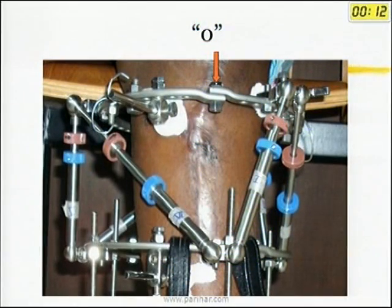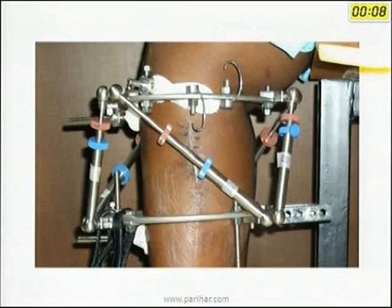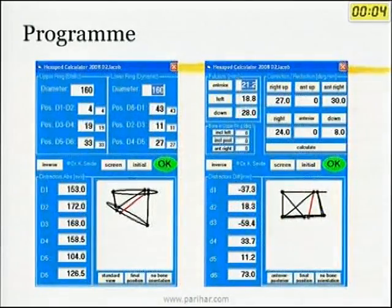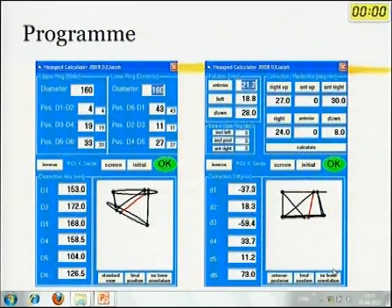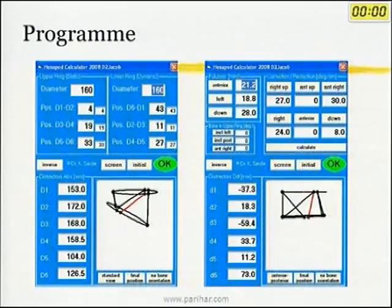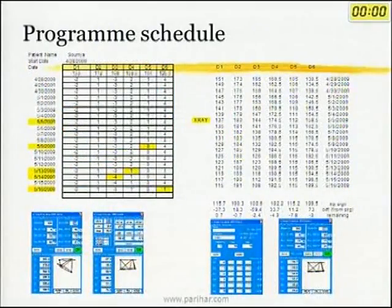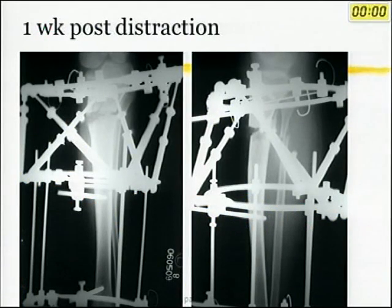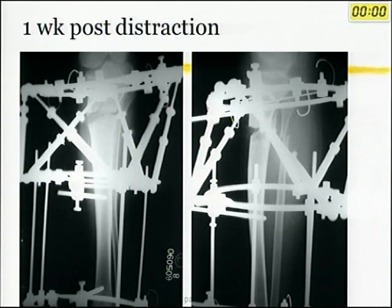An Ilizarov frame was applied with the reference connector positioned on the AP and lateral views. The data entered included a varus of 27 degrees, some translation, and a rotation of almost 30 degrees. The advantage of using a hexapod system is that all three corrections can be done simultaneously. The software shows visually what the frame looks like and how it will appear when corrected, and generates the distraction schedule. At one week post-distraction, the angulation is correcting along with translation, and although not visible on X-ray, the rotation is also correcting.